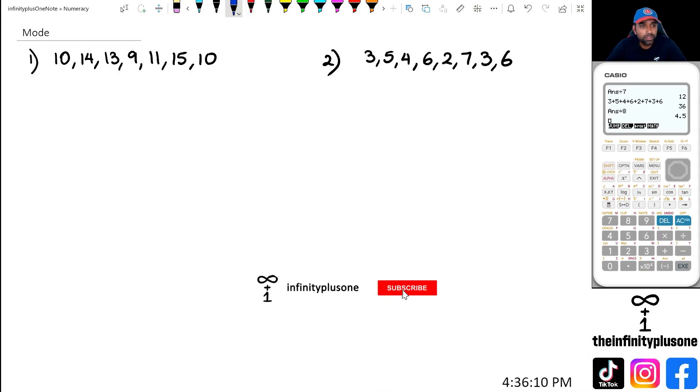Alright, so in the previous two videos, we had a look at the mean and the median. And this is of course mode. And this is probably one of the more easier ones. All it is, is that you have to have a look at the set of numbers and decide which number appears the most.